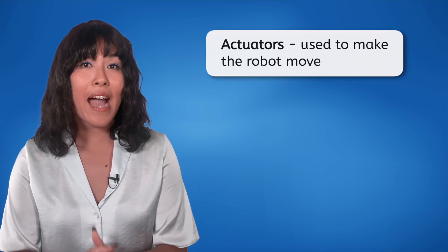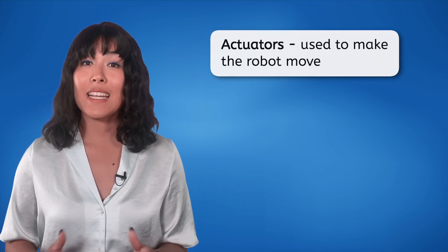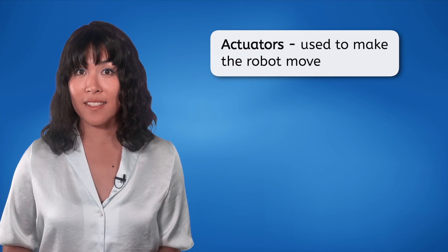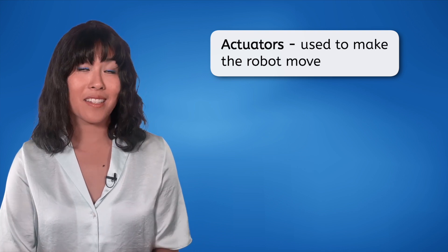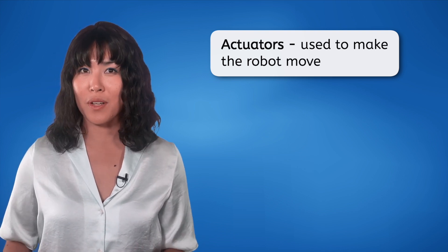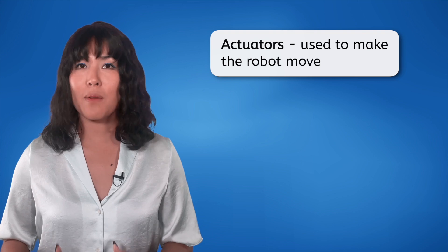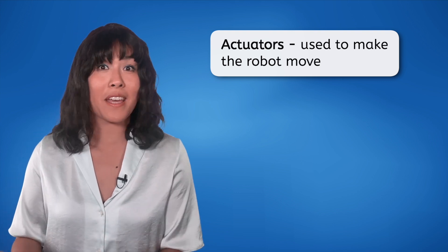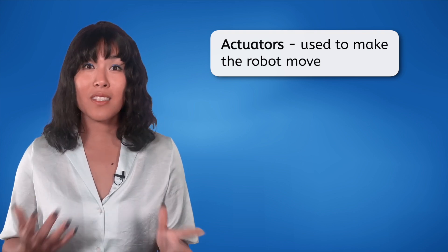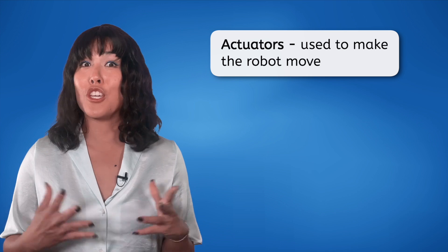Then, we have actuators. Once our robot senses its surroundings, it needs to act. Actuators are the components that allow this action, be it moving forward, turning, or even picking up an object. These are just like the muscles and tendons that help the human body move.